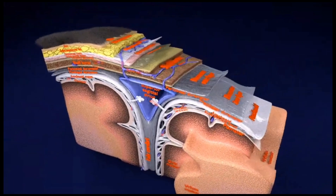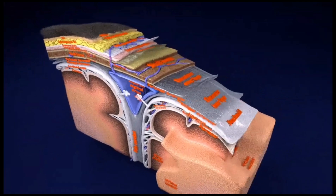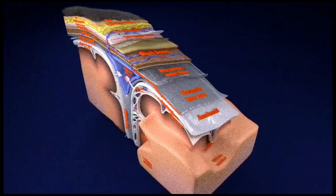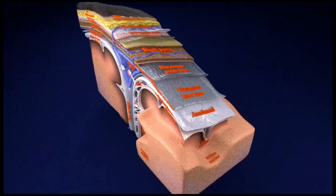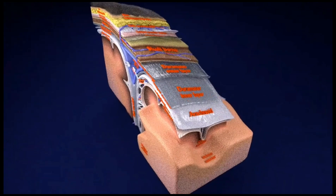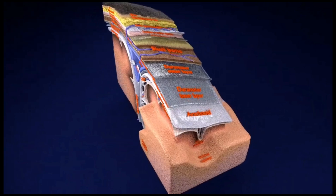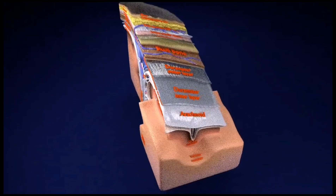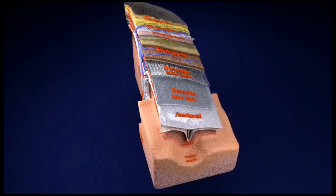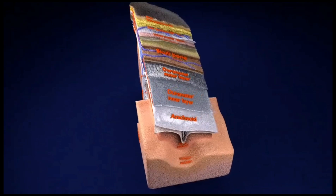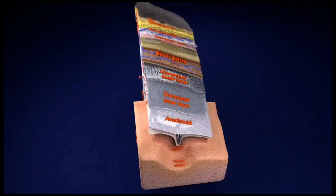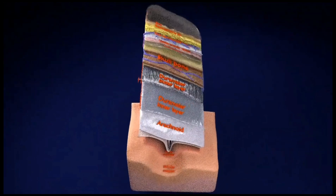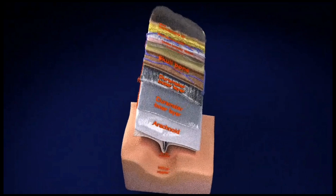The brain is the best protected organ in the body, with multiple layers of protection starting with the skull or cranium, which acts as armor shielding the brain from blows. Next are the meninges, which prevent damage by contact with the inside of the skull. Finally, the cerebrospinal fluid acts as a cushion in which the brain and spinal cord basically float.